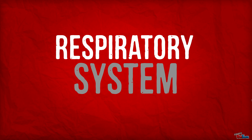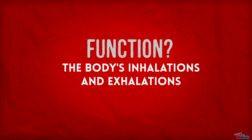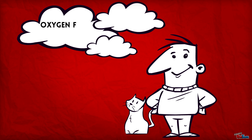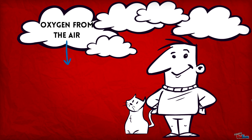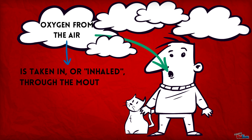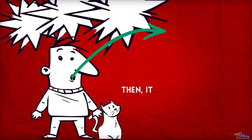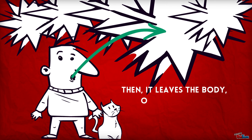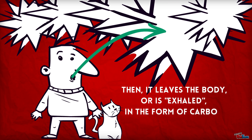The respiratory system. Its function is the body's inhalations and exhalations. Oxygen from the air is taken in, or inhaled, through the mouth and passes into the lungs. Then it leaves the body, or is exhaled, in the form of carbon dioxide.